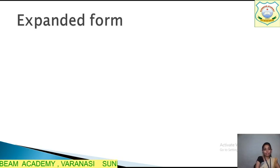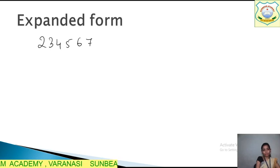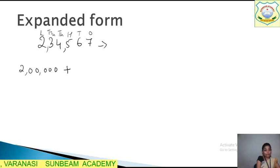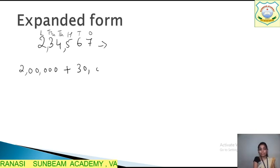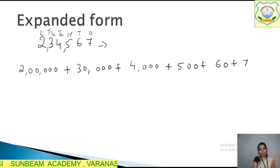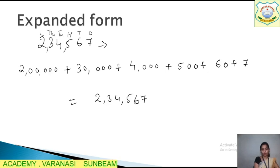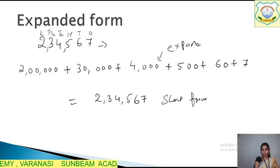Now what is expanded form? For example, there is the number 2,3,4,5,6,7. How do we write it in expanded form? This is 1s, 10s, 100, 1000, 10,000 and lakh. So first we write 2,00,000 plus 30,000 plus 4,000 plus 500 plus 60 plus 7. This is expanded form. If we write it in short form or standard form, it becomes 2,34,567.